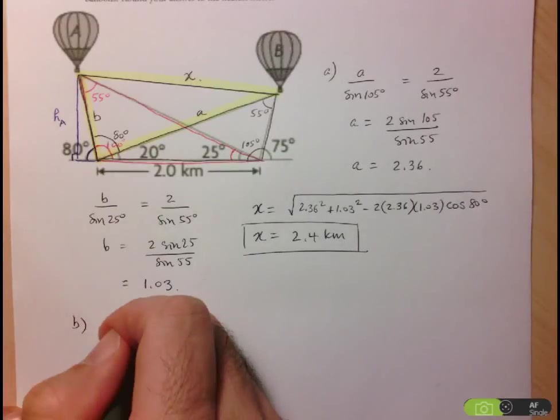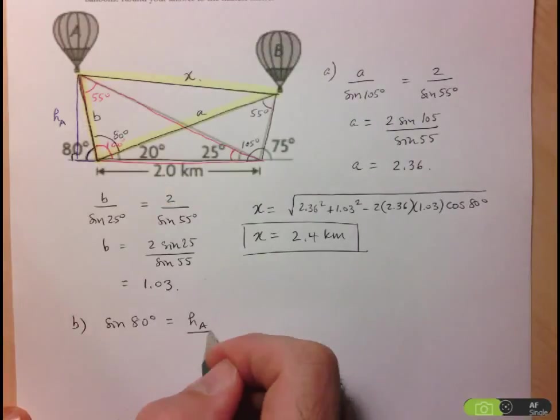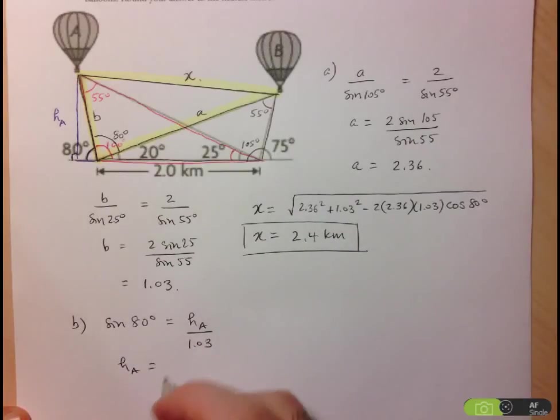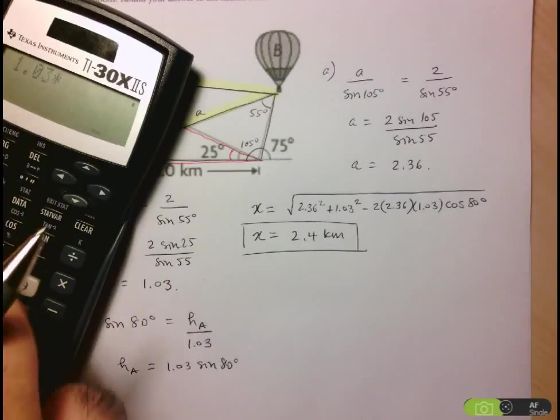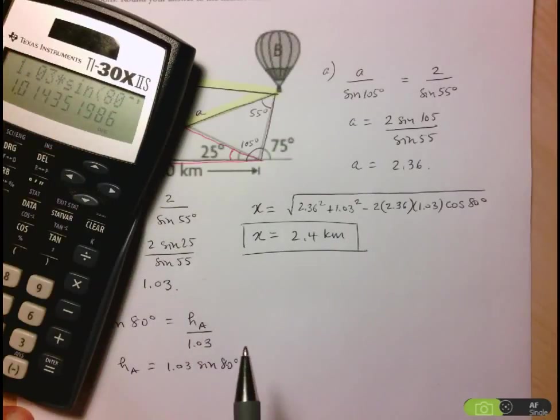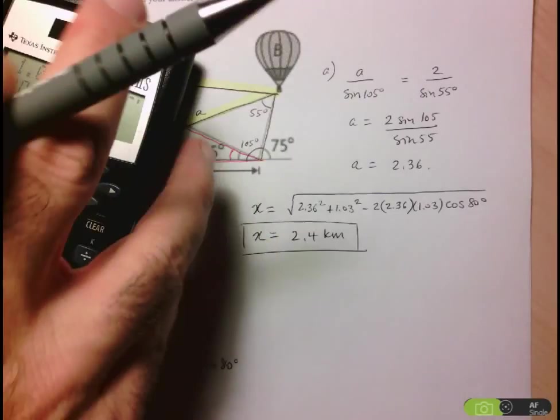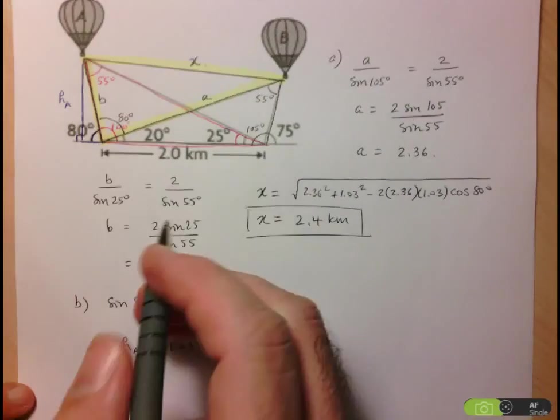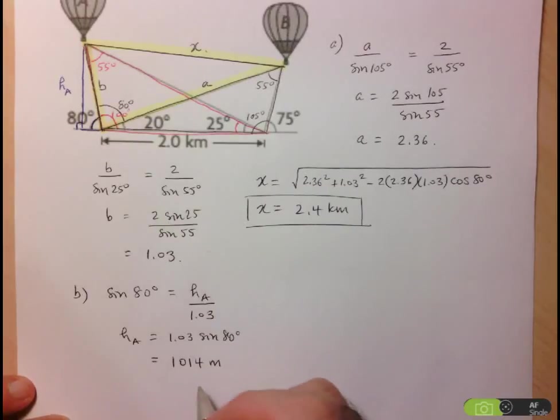So here, let's set that up. Sine of 80 degrees is the opposite, which is HA, over the hypotenuse, which is B, which we've already found, 1.03. So the height of A is going to be 1.03 times sine of 80 degrees. Let's calculate. 1.03 times sine of 80 degrees is equal to—now, since they want it to the nearest meter, that's one kilometer. So if we have to go to the nearest meter, I'll go to the third decimal place. So that will be 1,014 meters. I always follow what they're asking me to determine. So in this case here, they're asking to the meter. So that's what we have to do.